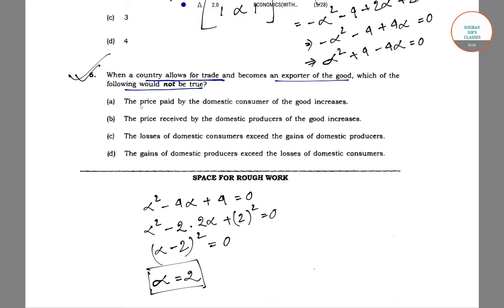There are four options. Option A says the price paid by the domestic consumer of the good increases. Option B says the price received by the domestic producer of the good increases. Option C says the losses of domestic consumers exceed the gains of domestic producers. Option D says the gains of domestic producers exceed the losses of domestic consumers.